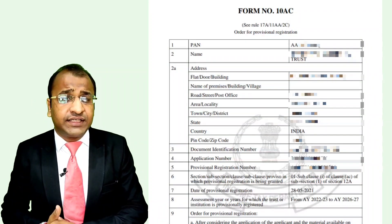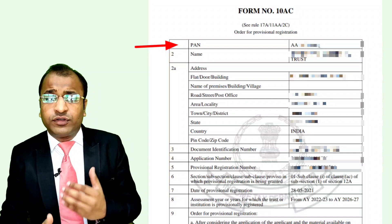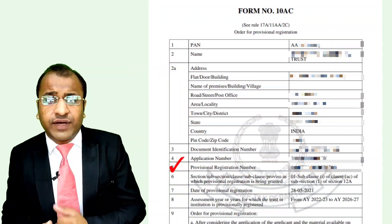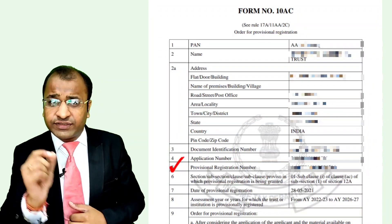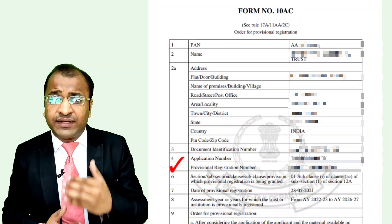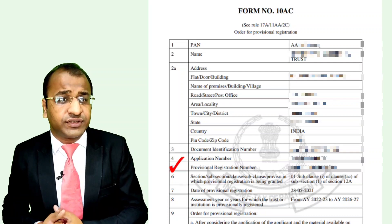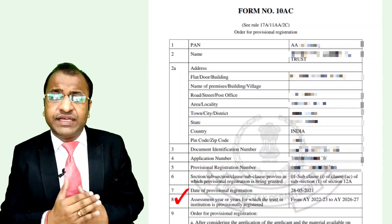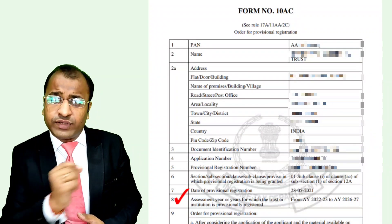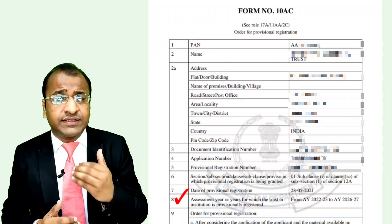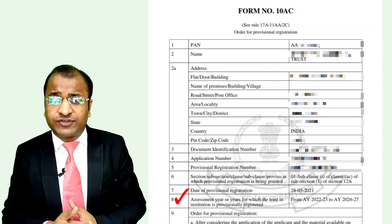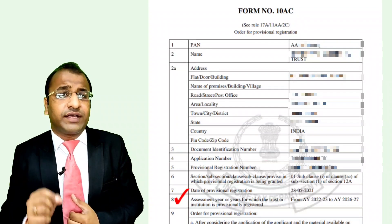You can see that the certificate starts with the PAN followed by the name and complete address of the organization. In point number 5, you will find the provisional registration number followed by the section under which the registration is granted and the date of registration. In point number 8, the period for which the registration is granted is mentioned. In case of new registrations, the validity is up to 3 assessment years, and in case of renewal of existing registrations, the validity shall be for 5 years.